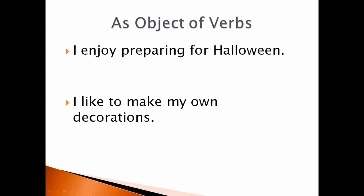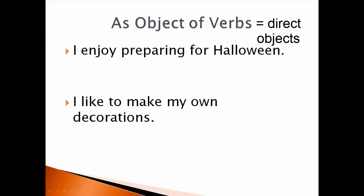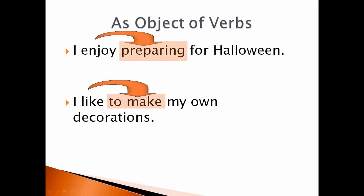Gerunds and infinitives can have different roles — different functions — in sentences. In this lesson we'll focus on how we use gerunds and infinitives as objects of verbs, also known as direct objects. In our example sentences we saw gerunds and infinitives as direct objects: 'enjoy preparing,' 'like to make.' Gerunds and infinitives can appear all by themselves as the direct object of a verb.